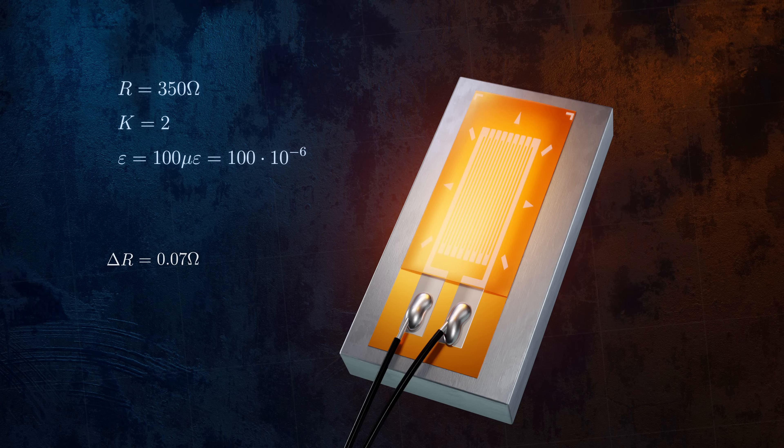Measuring such small changes in resistance is a challenge, but it can be done using an electrical circuit called a wheatstone bridge. The purpose of the wheatstone bridge is to accurately determine the electrical resistance of the strain gauge before and after a load has been applied.